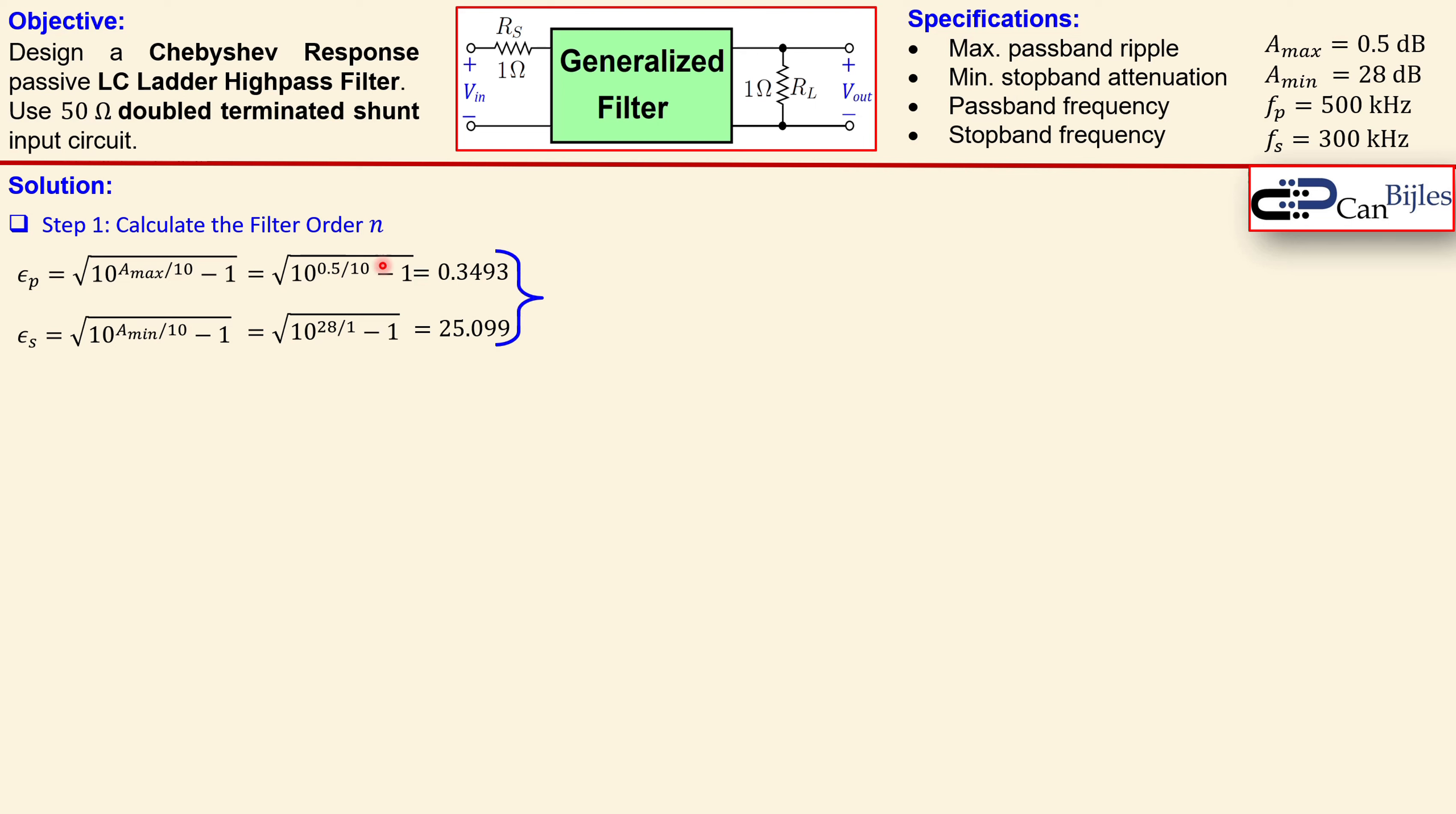Now taking this together we need to find the filter order n using this formula. You see arcosine hyperbolic and then epsilon s over epsilon p and also in the denominator for the fp and fs, the passband and stopband frequencies. When you substitute the values we can calculate that this is 4.5218, but we need to use integer order, so fourth order will be too low and it must be fifth order, so we need to go for n is 5.